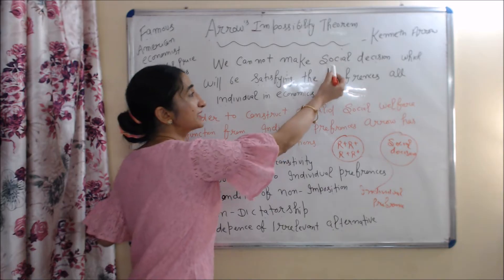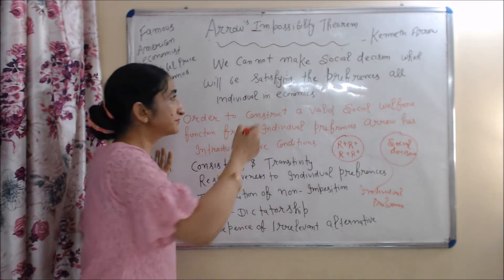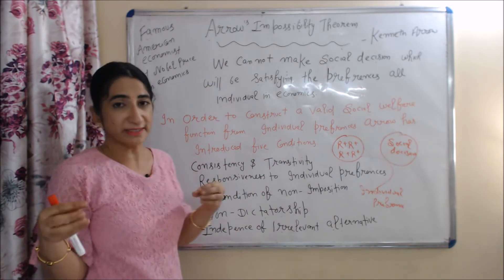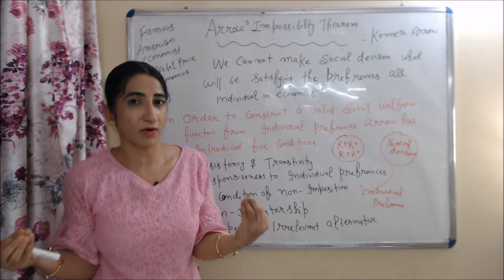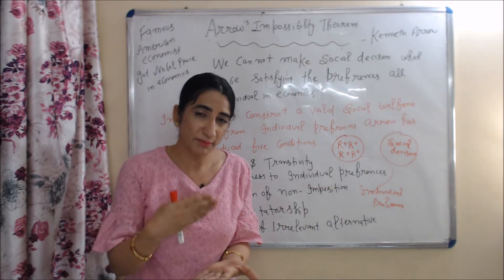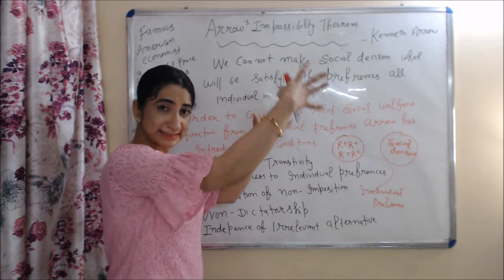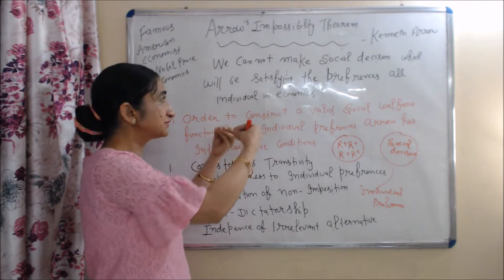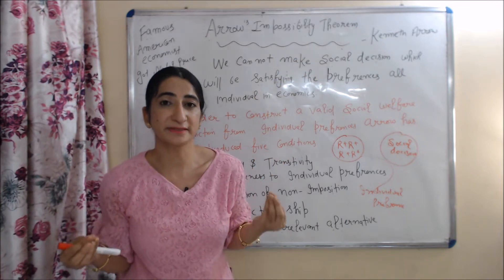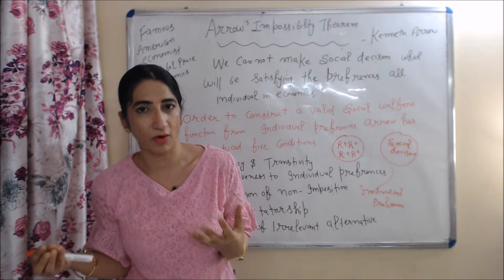According to the Arrow Impossibility Theorem, we cannot make a social decision that will satisfy the preferences of all individuals in economics.